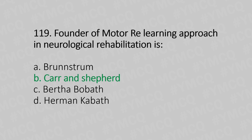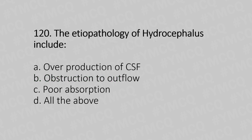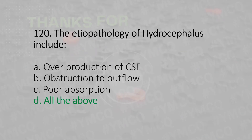Now let's move to question number 120. The etiopathology of hydrocephalus includes: Option A, overproduction of the CSF. Option B, obstruction of the outflow. Option C, poor absorption. Option D, all of the above. And the answer is Option D, all of the above.